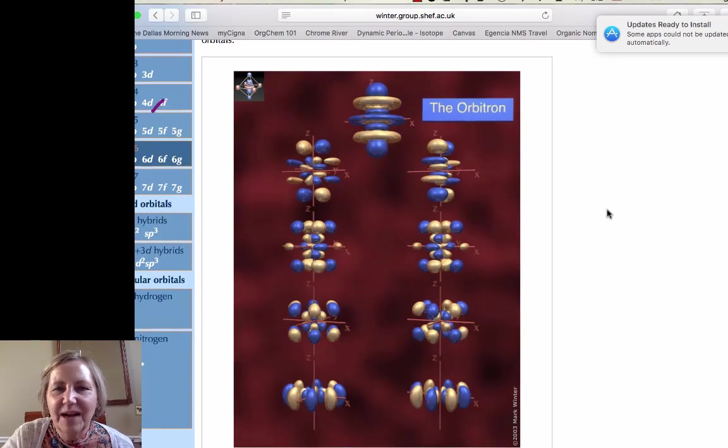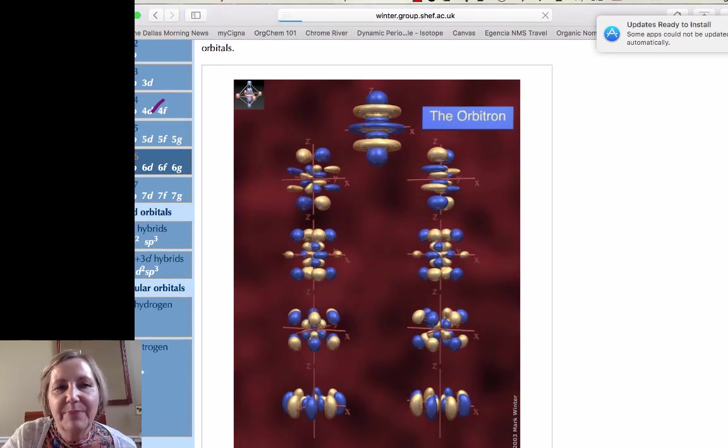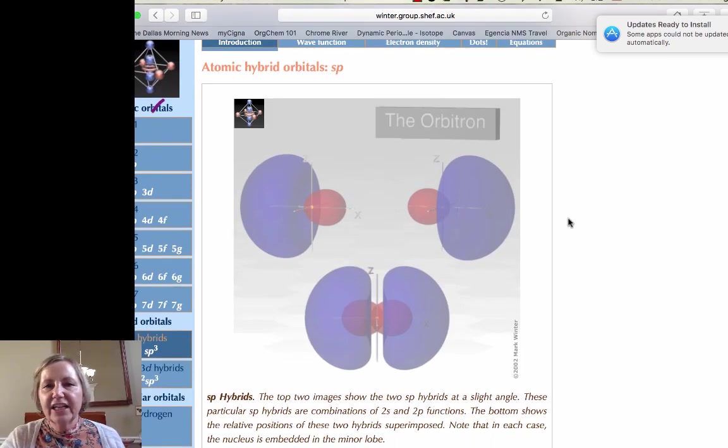This would be the six G orbitals. Aren't they awesome? I just love that. Well, what we're talking about today is about hybrid orbitals, so let's take a look.